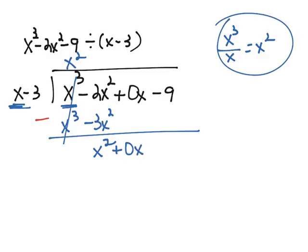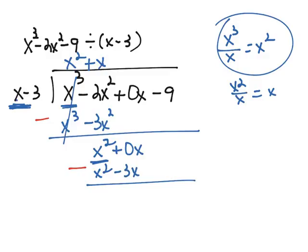We bring down the 0x and start the process over. x divides into x², x times, because x² divided by x is x. Multiply back: x times x is x², x times -3 is -3x. Subtract: 0 minus -3 is 0 + 3, which is 3x. The x² terms cancel.